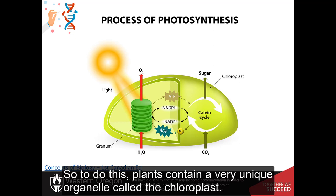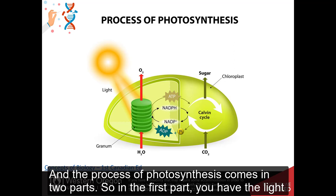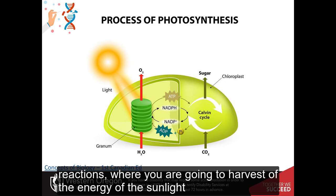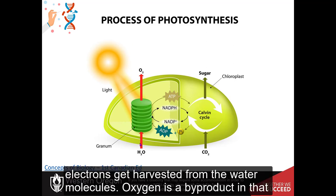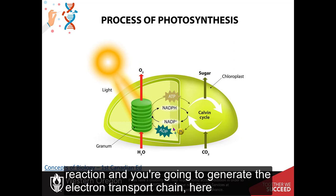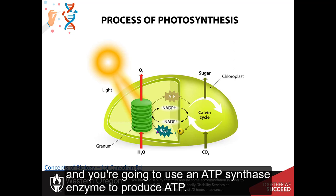So to do this, plants contain a very unique organelle that's called the chloroplast. And the process of photosynthesis comes in two parts. So in the first part, you have the light reactions, where you're going to harvest the energy of the sunlight and use that to create ATP. So that's shown here in this diagram. So the energy is going to come in. Electrons get harvested from the water molecules. Oxygen is a byproduct in that reaction. And you're going to generate the electron transport chain here. And you're going to use an ATP synthase enzyme to produce ATP.